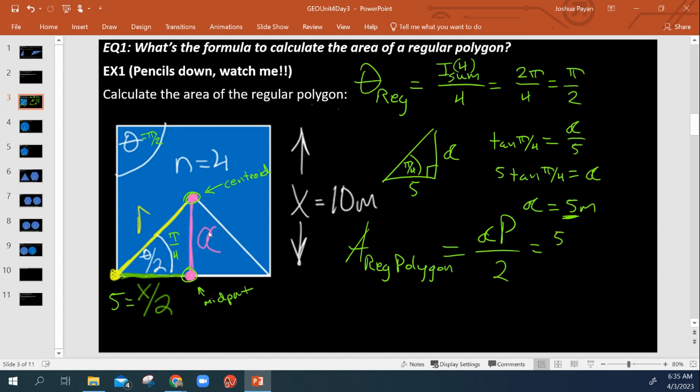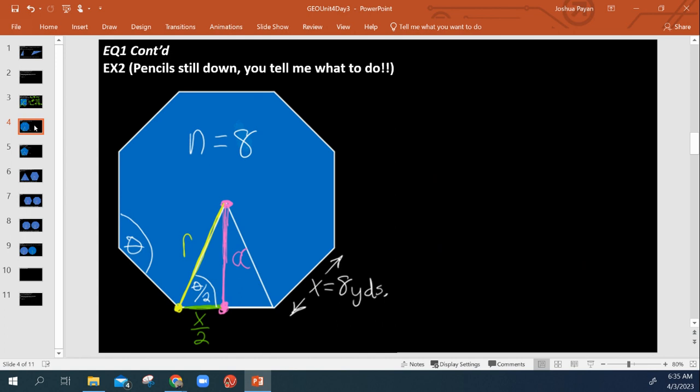Apothem times P perimeter all divided by 2. Well, we know the apothem now. The apothem right here is 5. The perimeter, well, it's a regular polygon with 10 meter sides, so the perimeter is 4 times 10, which is 40, all divided by 2. And we get the exact same thing we did as when we did the area of a parallelogram.